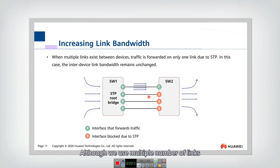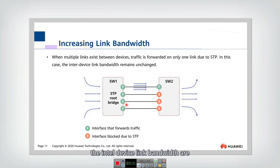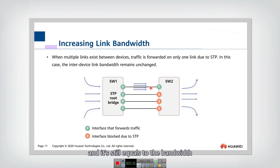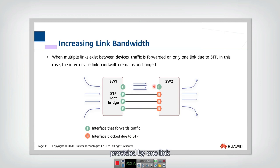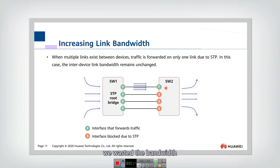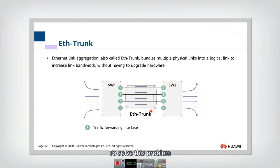Although we use multiple links, the inter-device link bandwidth is still unchanged and still equal to the bandwidth provided by one link. So by using STP, we wasted the bandwidth that could be provided by multiple links.